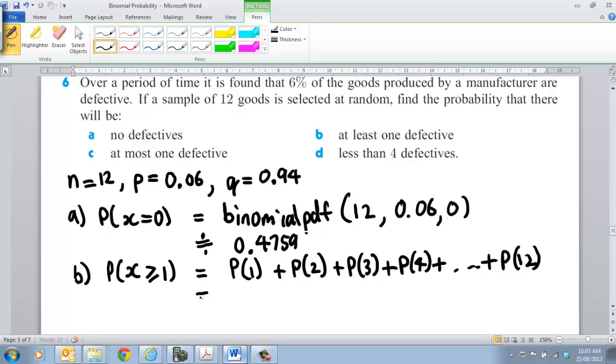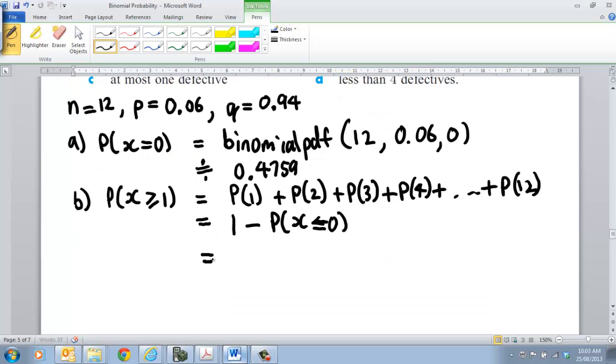So probably getting at least one defective. What's the opposite of doing that? Well, that would be 1 take the probability of X being less than or equal to zero. Probability X being less than or equal to zero. We've already worked out what that one is. So that's equal to 1 take 0.4759. So that's going to be equal to 0.5241. We've got a 52.41% chance. So that's what we call the complementary binomial of that.